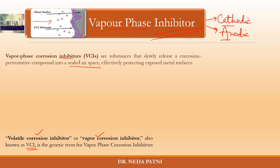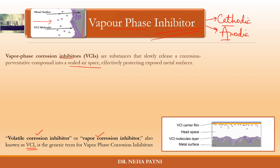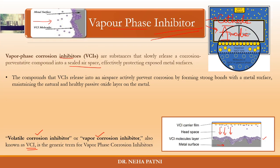If you have a metal surface, the VCI molecules are released into the space. As you can see in the picture, a carrier film releases the compound — the substance which prevents corrosion. That compound falls onto the metal you want to protect, and when the molecules fall down, they make a layer on the surface of the metal. These layers form strong bonds with the metal surface, so the metal surface is no longer available for attack — the coating has already been done.